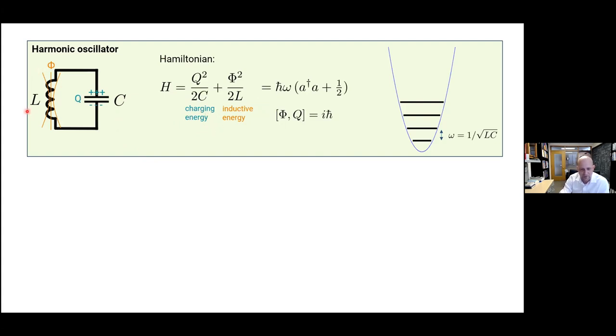And so we write down a Hamiltonian that should look familiar. There's a term for the electrostatic charging energy with Q being the charge on this capacitor with capacitance C. And then there's an inductive term with phi being the flux through this inductor with inductance L. And lo and behold, if we take our little step from classical to quantum mechanics, this flux and the charge become noncommuting operators. And, you know, once the dust settles, it is a harmonic oscillator. So it is not a surprise to anybody that you get the usual form of a quantum harmonic oscillator and an energy spectrum that has these equidistant energy levels.